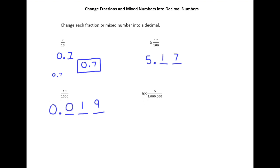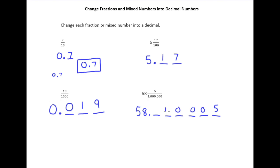Finally, we have 58 and 5 millionths. So we have 58 to the left of the decimal point, and now we count over: tenths, hundredths, thousandths, ten-thousandths, hundred-thousandths, millionths. That means I want my 5 all the way over in the millionths place with a whole bunch of zeros between it and the decimal point.